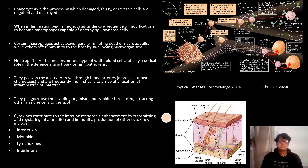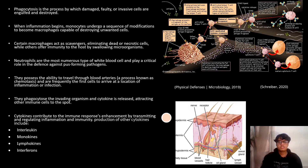Phagocytosis is used to describe the process by which damaged or foreign cells are engulfed and destroyed. When inflammation begins, monocytes undergo a sequence of modifications to become macrophages, capable of destroying unwanted cells. Once ingested, the particle is destroyed by cellular enzymes.